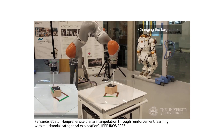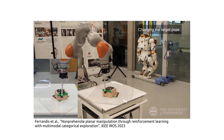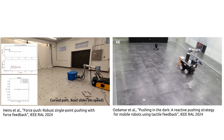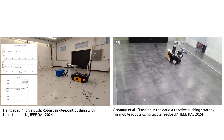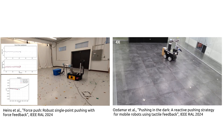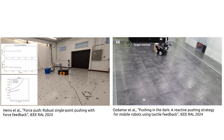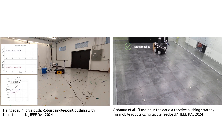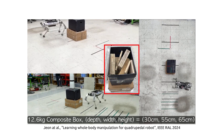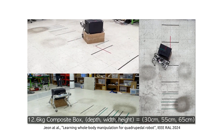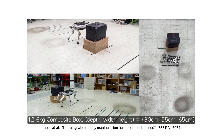Previous research has focused on fixed-base manipulators pushing lightweight small objects on low-friction surfaces. On mobile base robots, existing controllers relying on force or tactile feedback fail to generate contact-rich behaviors and consider only position goals. Existing RL-based approaches for robustly pushing with the robot's base do not consider adjusting the height of the pushing location.